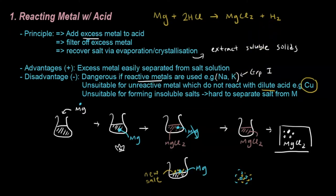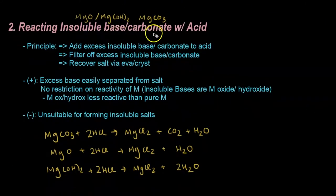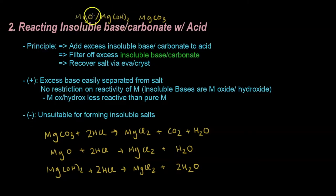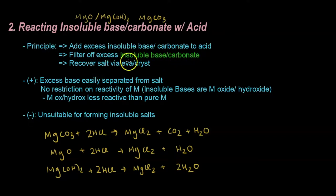The second way to form a soluble salt is to react insoluble base or carbonate with acid. For example: magnesium oxide, magnesium hydroxide, or magnesium carbonate. The principle is to add excess insoluble base or carbonate to acid, filter off the excess carbonate or base, then recover the salt using evaporation or crystallization — similar to the metal with acid method.